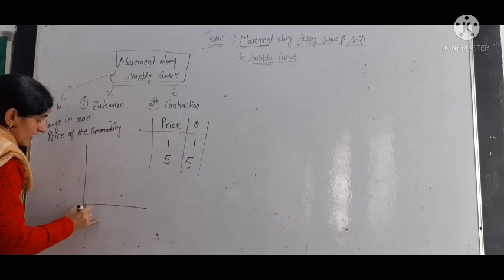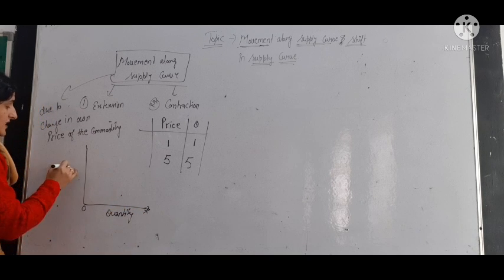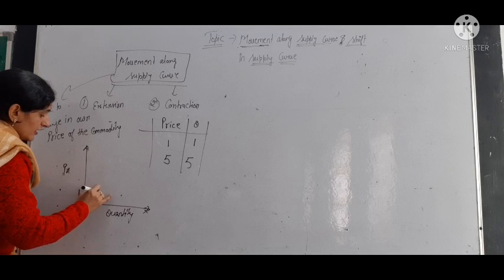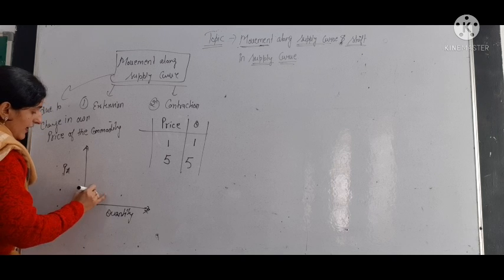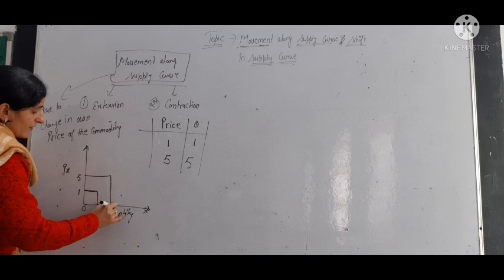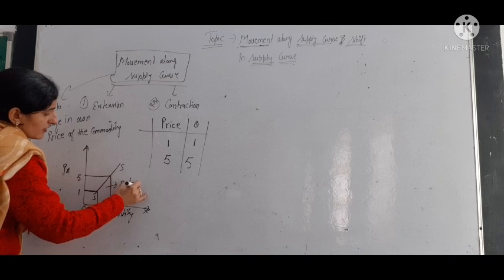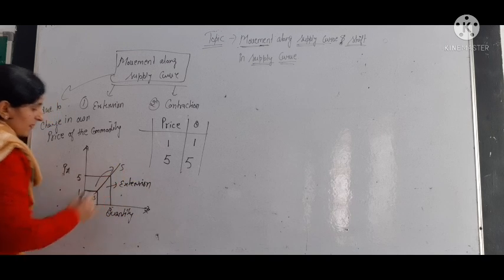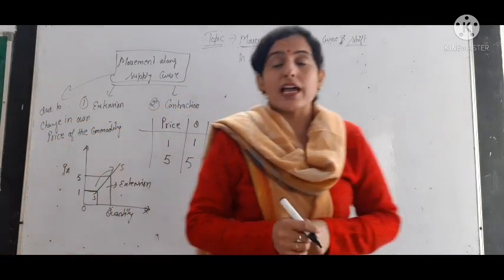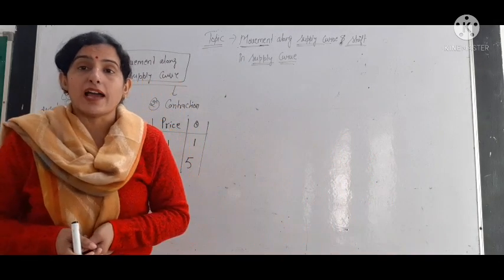This is the extension of the supply curve. How do we show this in a diagram? On the OX axis we take quantity, and on the OY axis we take the price of the commodity. When price is 1, quantity supplied is 1. When price increases to 5, quantity supplied also becomes 5. This movement upward along the supply curve is called extension or expansion in supply.